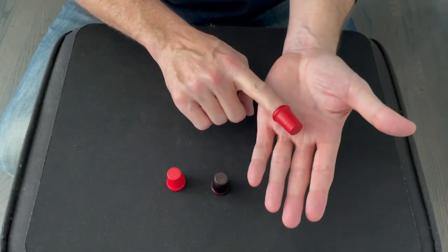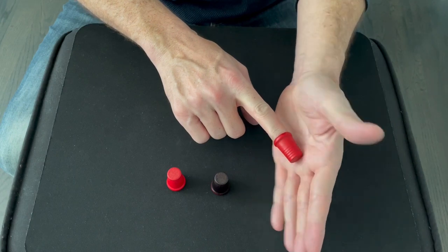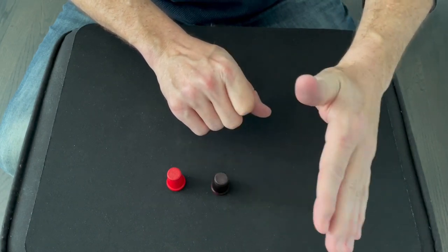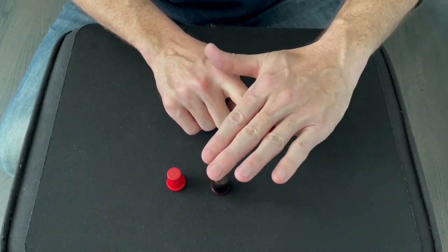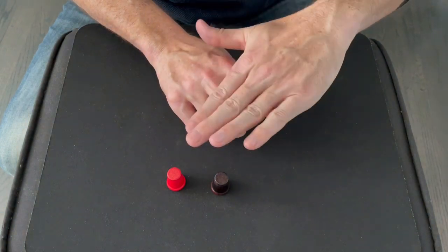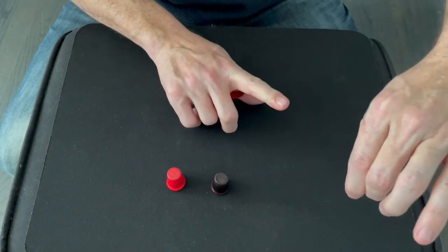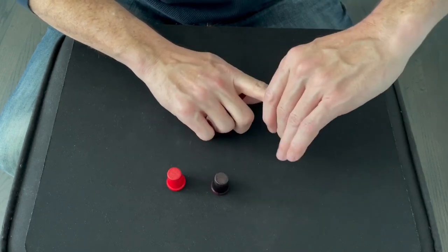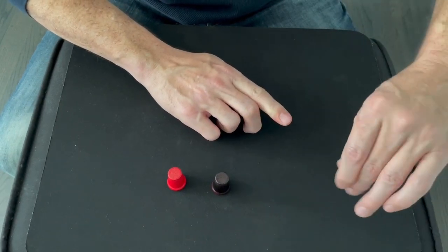To do this basic vanish, you're going to put the thimble into thumb palm under the cover of your other hand. And then you'll straighten your finger back out without the thimble on it as you move your hand away and it'll look as though it vanished. Practice these moves over and over until you can do them in sync to make it look seamless.